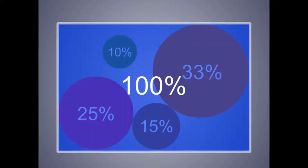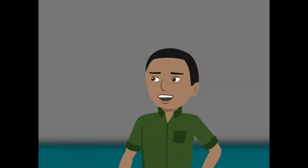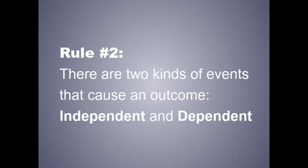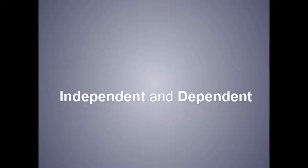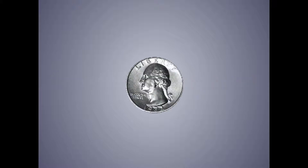Isn't that related to the possibility space we talked about earlier? Good call, Nicole — it's the same thing. Rule number two: there are two kinds of events that cause an outcome — independent and dependent. Two events are independent if one does not affect the outcome of the other. Dependent events are when one event does affect the outcome of the next.